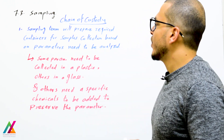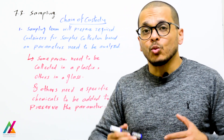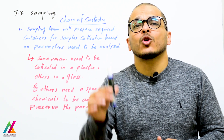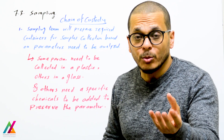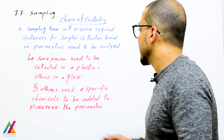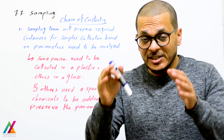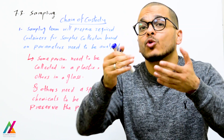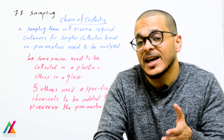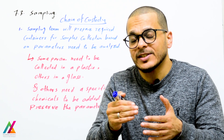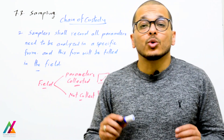Following the chain of custody, the sampling team will prepare the required containers for sample collection based on the parameters to be analyzed. Some parameters need to be collected in plastic containers, others in glass, and others require specific chemicals to be added to the container before collection to preserve the sample.